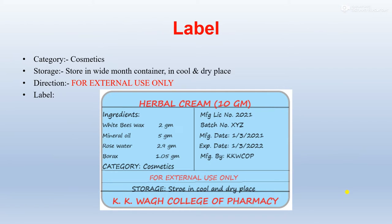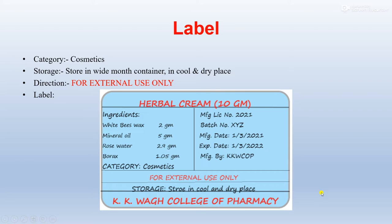The label for herbal cream: category is cosmetic; storage conditions require a wide mouth container in a cool and dry place; direction is for external use only. The label consists of the name of the formulation, quantity, ingredients, category, manufacturing license number, batch number, date, expiry date, manufacturer details, direction, and storage conditions. This is the label for the 10 grams of herbal cream we have prepared.